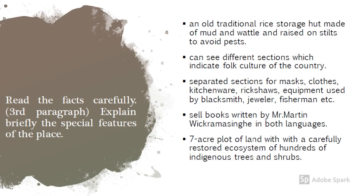Now read the facts given carefully to write the third paragraph. Explain briefly the special features of this place. Facts: an old traditional rice storage hut made of mud and wattle and raised on stilts to avoid pests; different sections indicating folk culture of the country; separated sections for masks, clothes, kitchenware, rickshaws, equipment used by blacksmiths, jewelers, fishermen, etc.; sells books written by Mr. Martin Vikramasingha in both languages; a seven-to-eight-acre plot of land with a carefully restored ecosystem of hundreds of indigenous trees and shrubs.